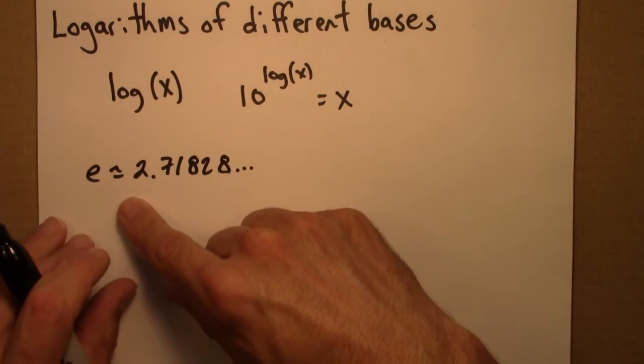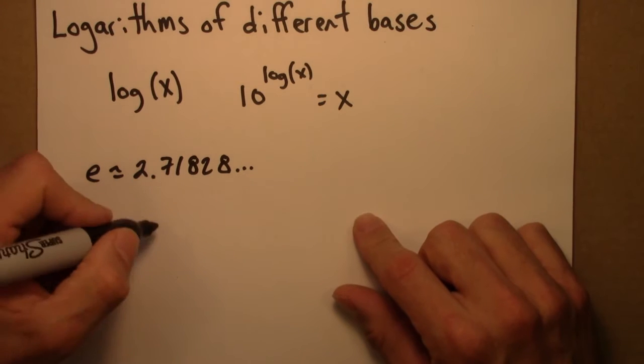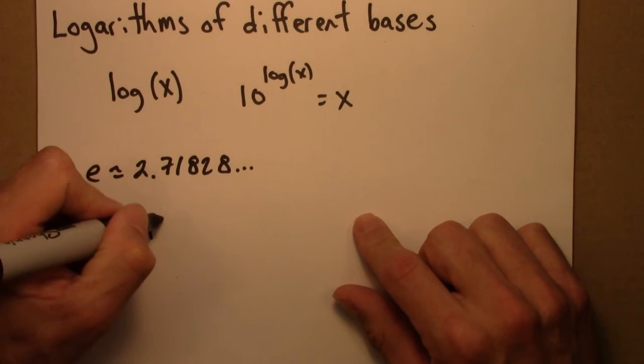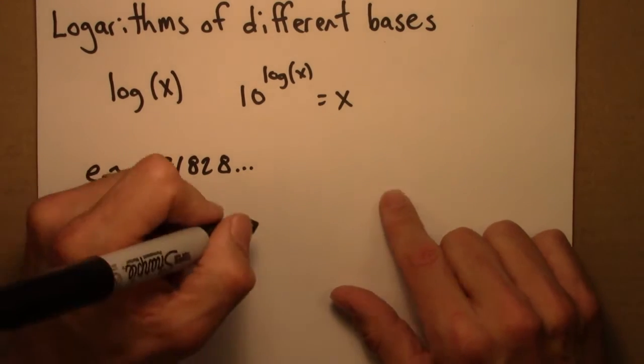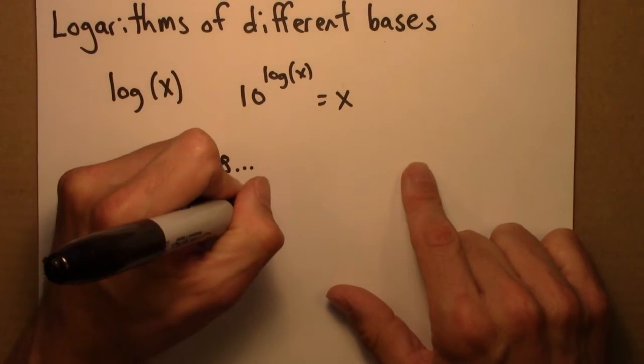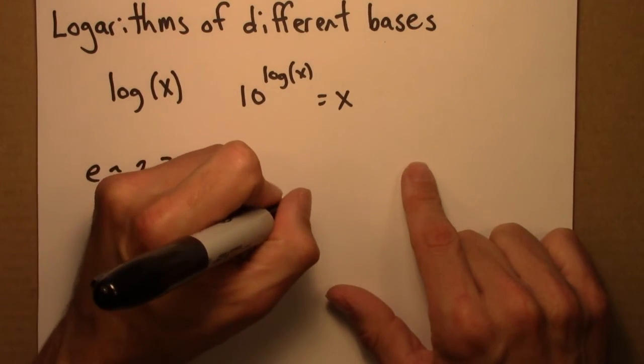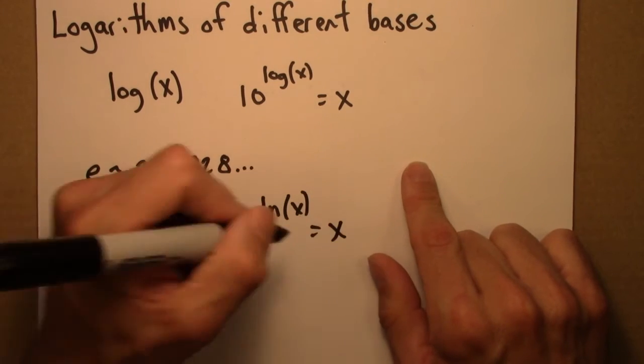And if you use e for the base in a logarithm, it's usually written like this. e to the natural log of x equals x.